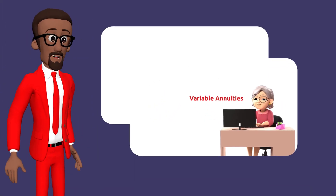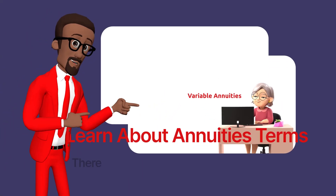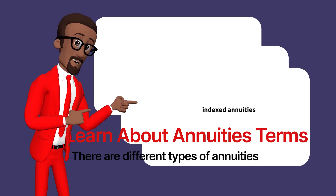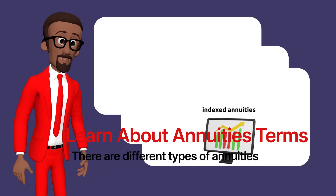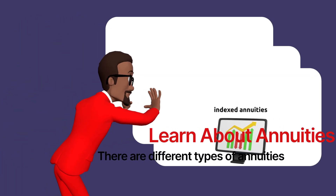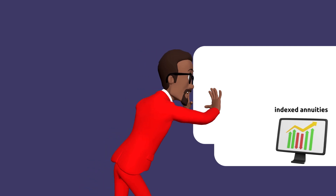There are different types of annuities, such as fixed annuities, variable annuities, and indexed annuities. Each type has its own set of terms and features.